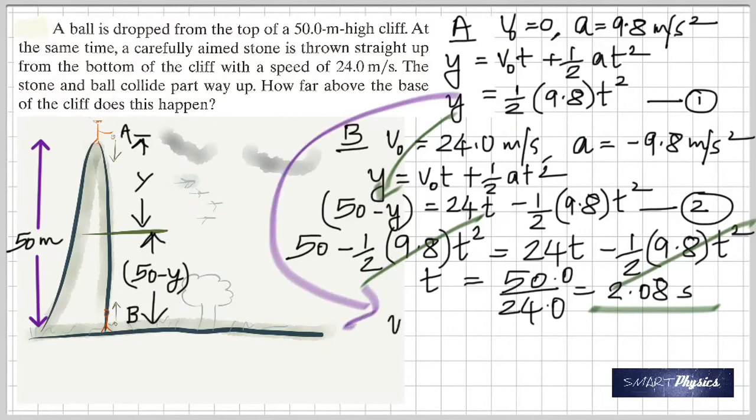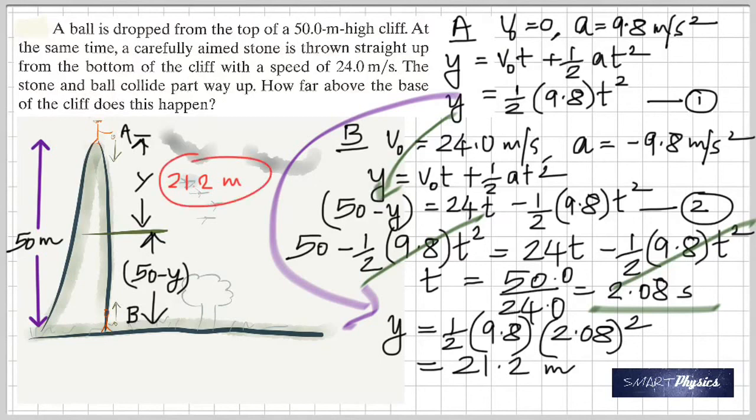That is one half times 9.8 times 2.08 squared, which gives us 21.2 meters. Therefore, the distance from the bottom of the cliff is 50 minus 21.2, which is 28.8 meters. I hope you enjoyed and really understood this problem. Thank you.